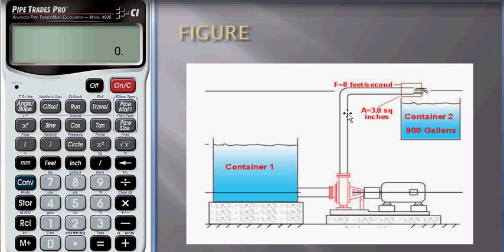This is the pipe shown in the figure where we need to fill water coming from that pipe to fill the container. The area is 3.8 square inches, the area of the pipe.